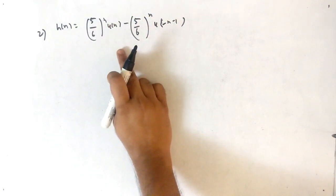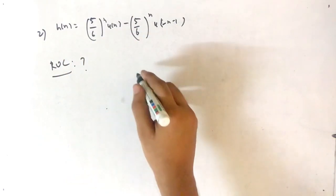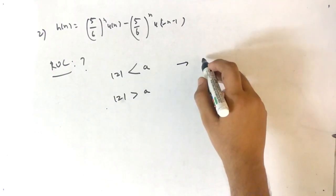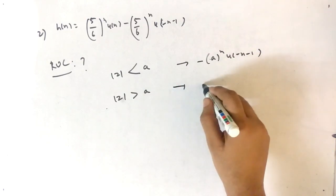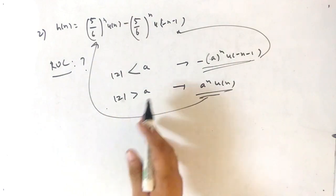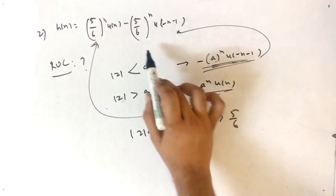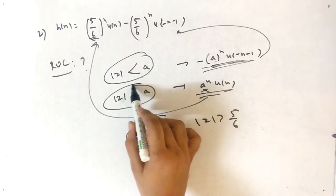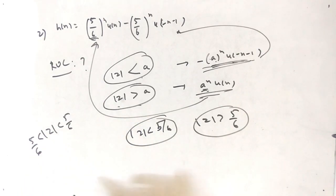Gate Question 2: h(n) = (5/6)^n·u(n) - (5/6)^n·u(-n-1). Find the ROC. The first term matches a^n·u(n), so its ROC is |z| > 5/6. The second term matches -a^n·u(-n-1), so its ROC is |z| < 5/6. Combined answer: |z| < 5/6 and |z| > 5/6.